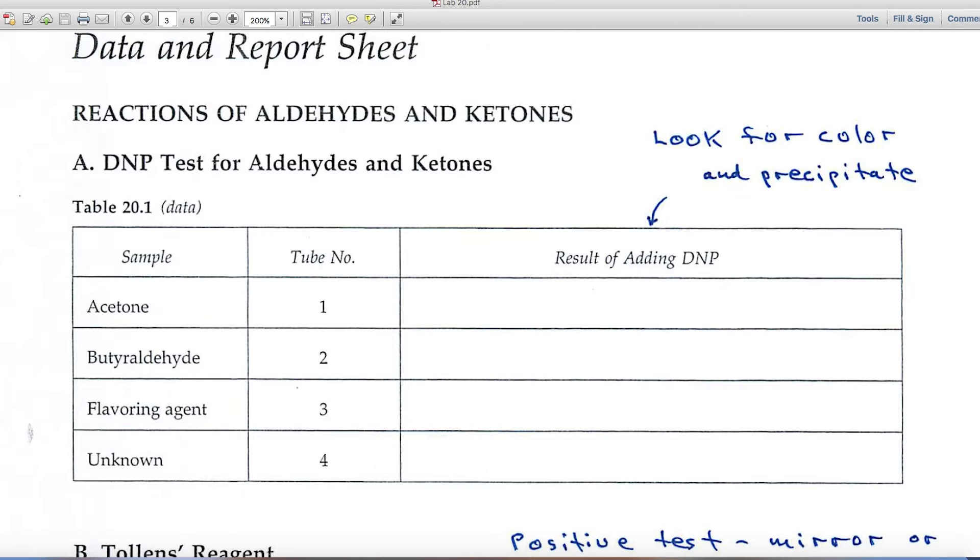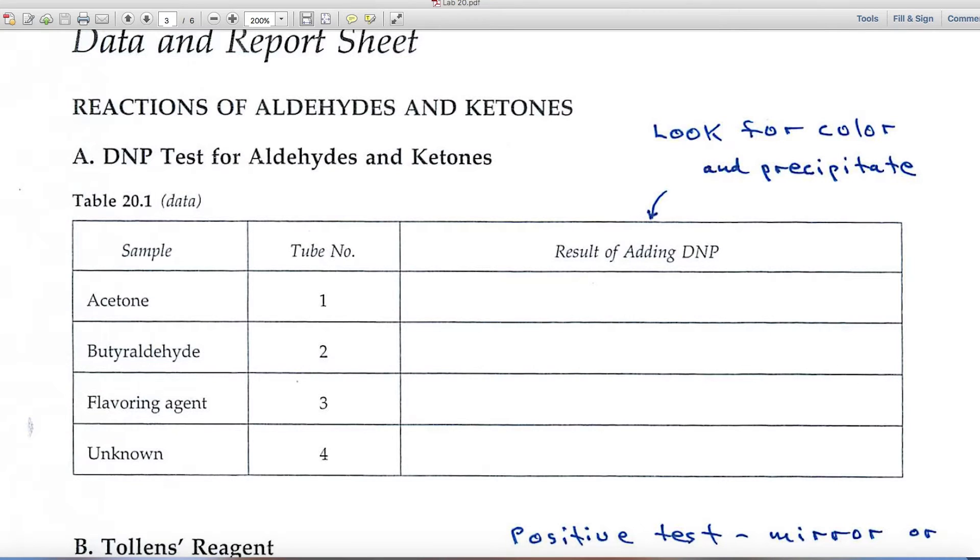And in part A, the DNP test, you'll want to look for color and precipitates. Those are the results for adding DNP.